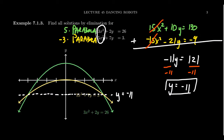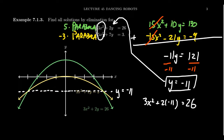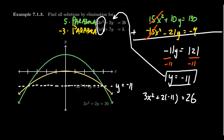So how do we figure out what the x-coordinates are? We're going to take this y-coordinate and plug it into one of the two equations — it really doesn't matter which one. I'm going to pick the first one: 3x² + 2(-11) = 26.